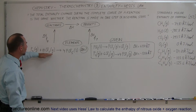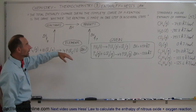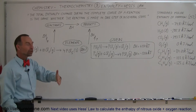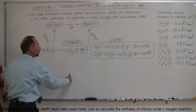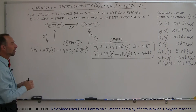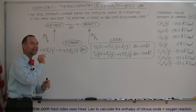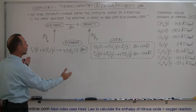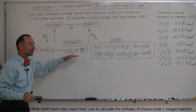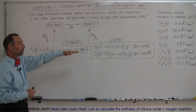The total enthalpy change during the complete course of a reaction — even though we may not be able to produce it in the laboratory readily — is the same whether the reaction is made in one step or in multiple steps through a course of other reactions to finally get from the reactants to the products. It doesn't matter how you get there: if you go through one, two, or ten reactions, the delta H of the sum of all those other reactions will equal the enthalpy change of the single reaction as presented.